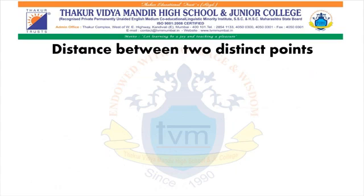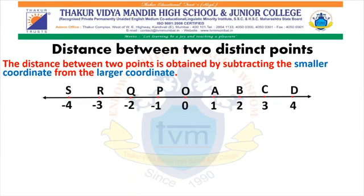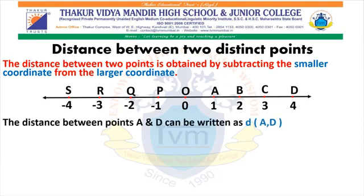Distance between two distinct points. What do you mean by distance between two distinct points, or how do you calculate distance between two distinct points? The distance between two distinct points is obtained by subtracting the smaller coordinate from the larger coordinate. We will try to understand this with the help of an example. Here we have a number line. The distance between point A and D can be written as d(A, D), where small d represents distance and A and D are the two points separated by a comma. We read it as distance A, D.